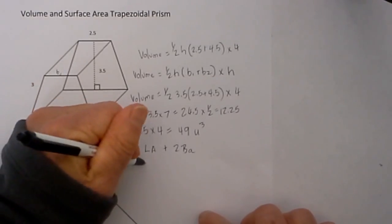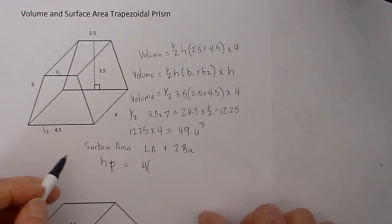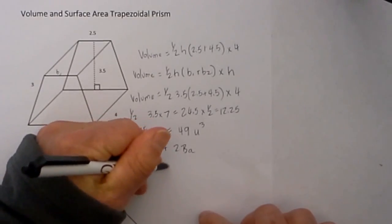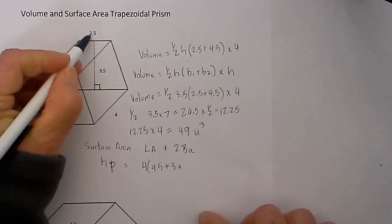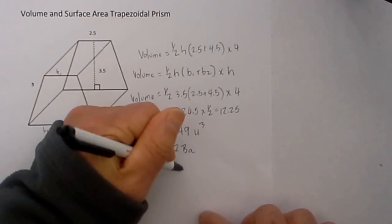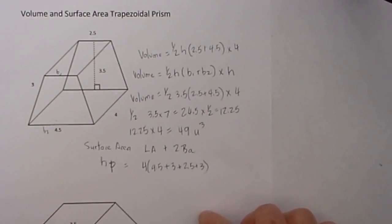The height of the prism is 4, and then we multiply that by the perimeter of the trapezoid, and that's 4.5 plus 3 plus 2.5 plus 3, and that gives us our perimeter.